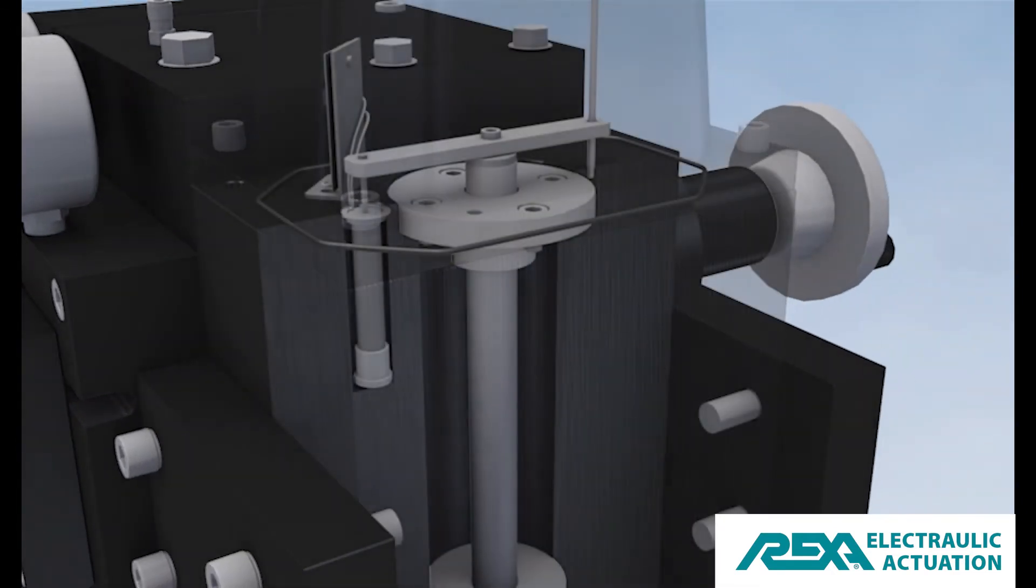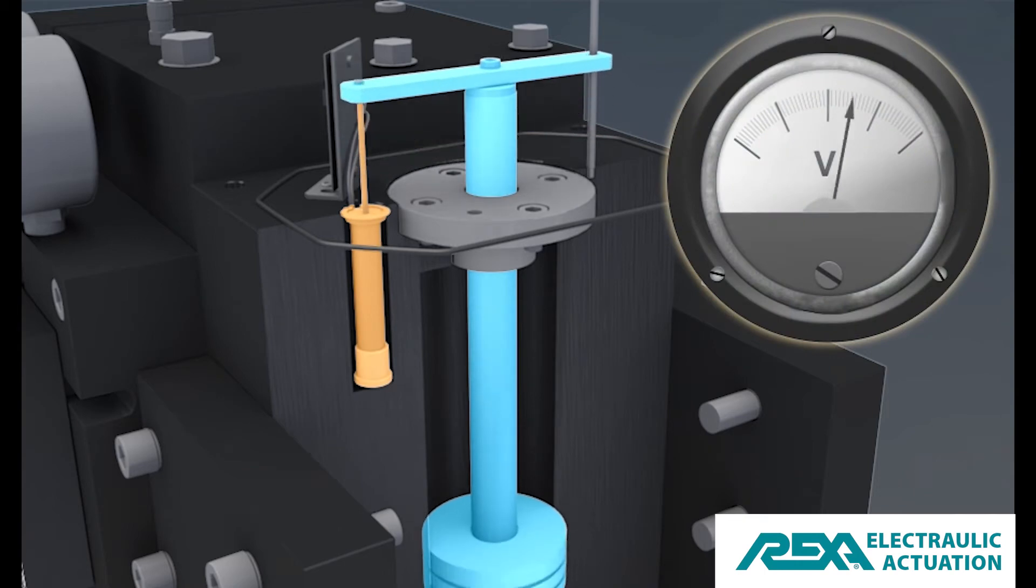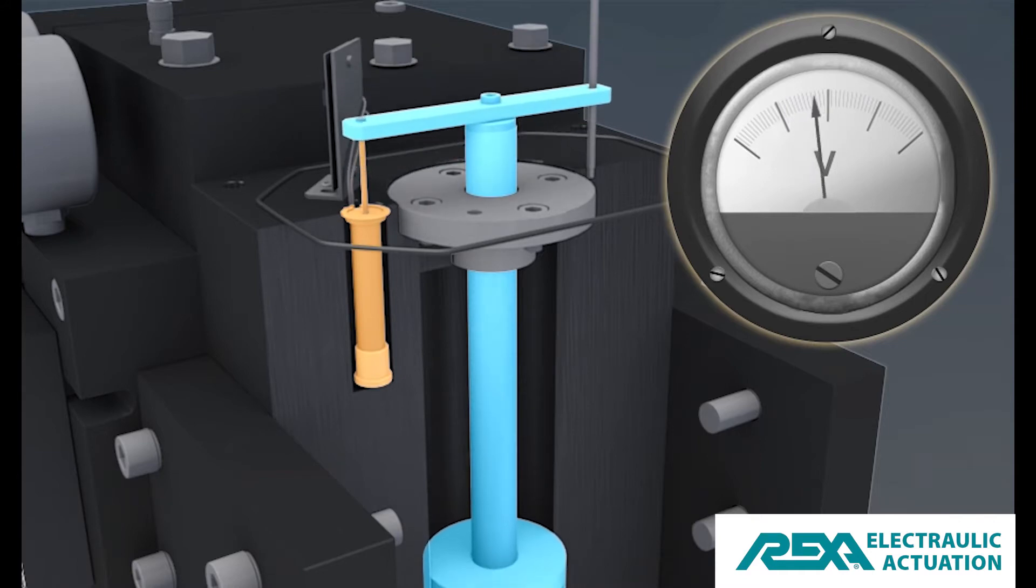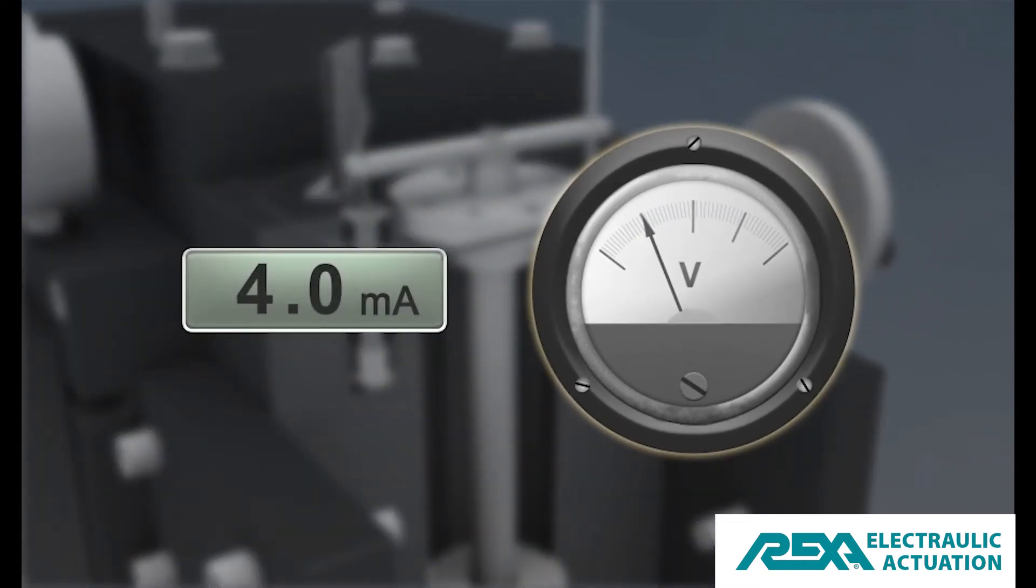The feedback module contains a potentiometer connected to the hydraulic cylinder. As the cylinder moves, it also moves the potentiometer, adjusting the signal from this device, which represents the position of the valve. The feedback board converts the potentiometer measurement to a 4 to 20 milliamp signal as the potentiometer changes position. The current will vary in relation to position.